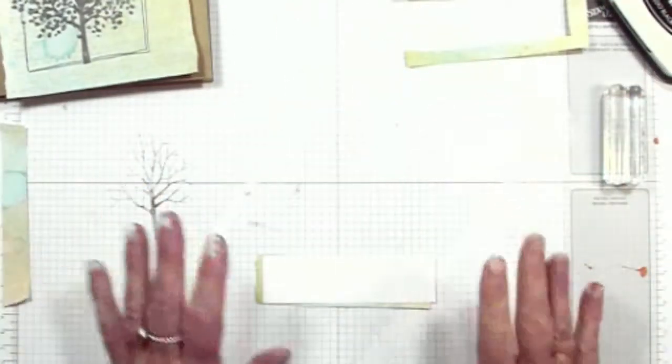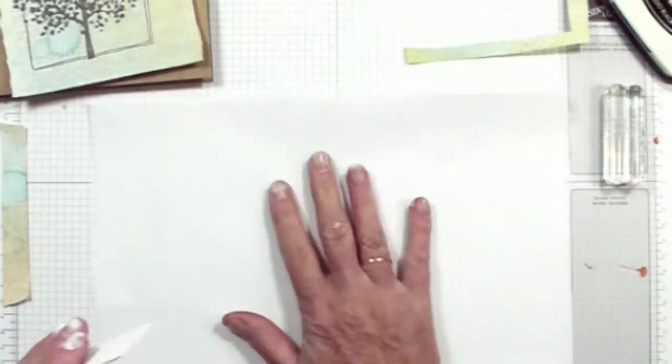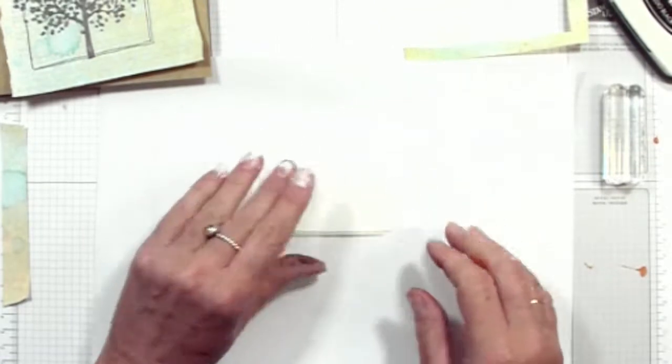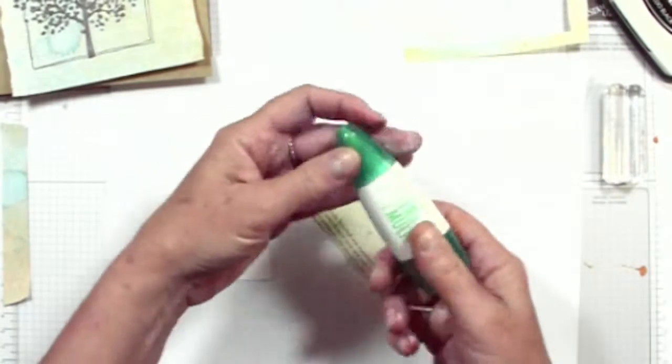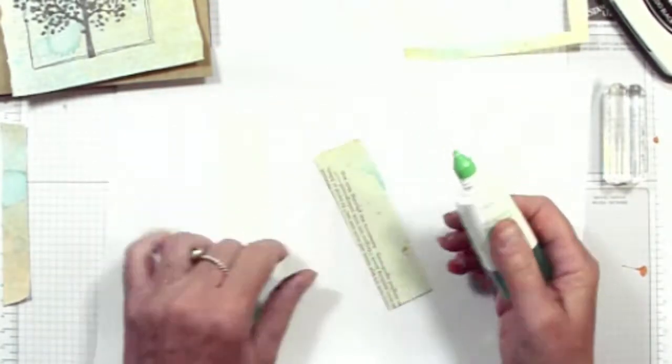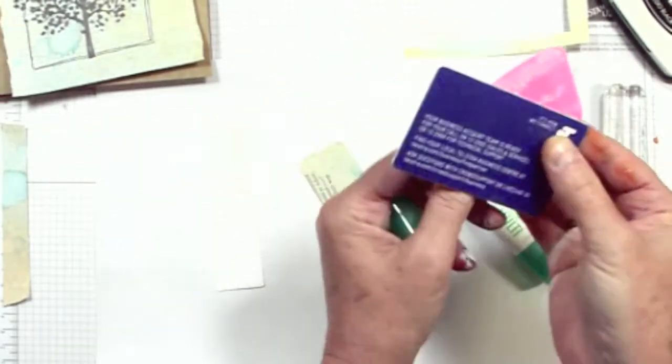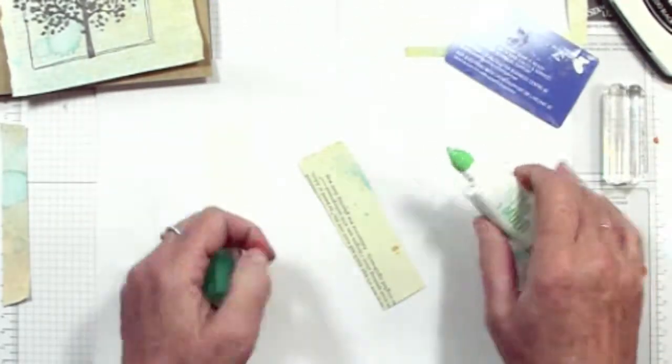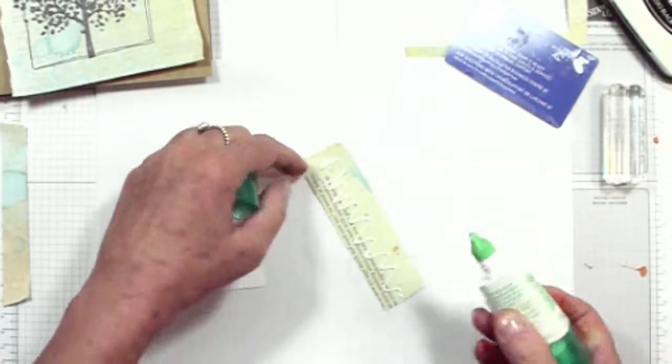Now this is where you're going to need some scrap paper. I have a couple of sheets of scrap paper on hand because the gluing bit does get very messy. Use your multi-purpose glue and your credit card or your little scraper and just pop some glue onto the back of your paper.